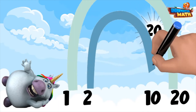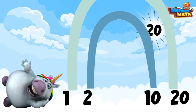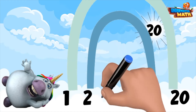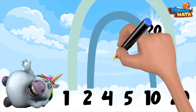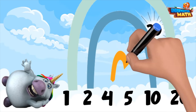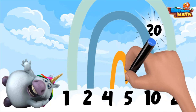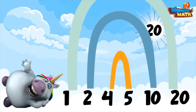You cannot multiply 3 by anything to make 20, so I'll skip that one. 4 times 5 equals 20, so I will include those two factors as well and build my rainbow. Since I hit the next number, 5, when I multiplied by 4, I know there aren't any more factors of 20.